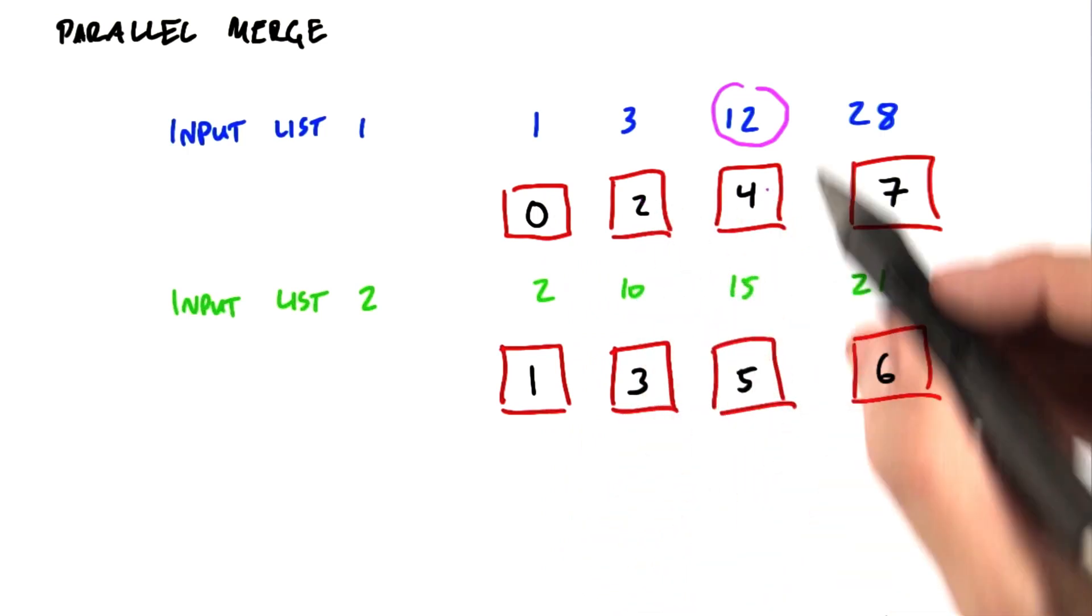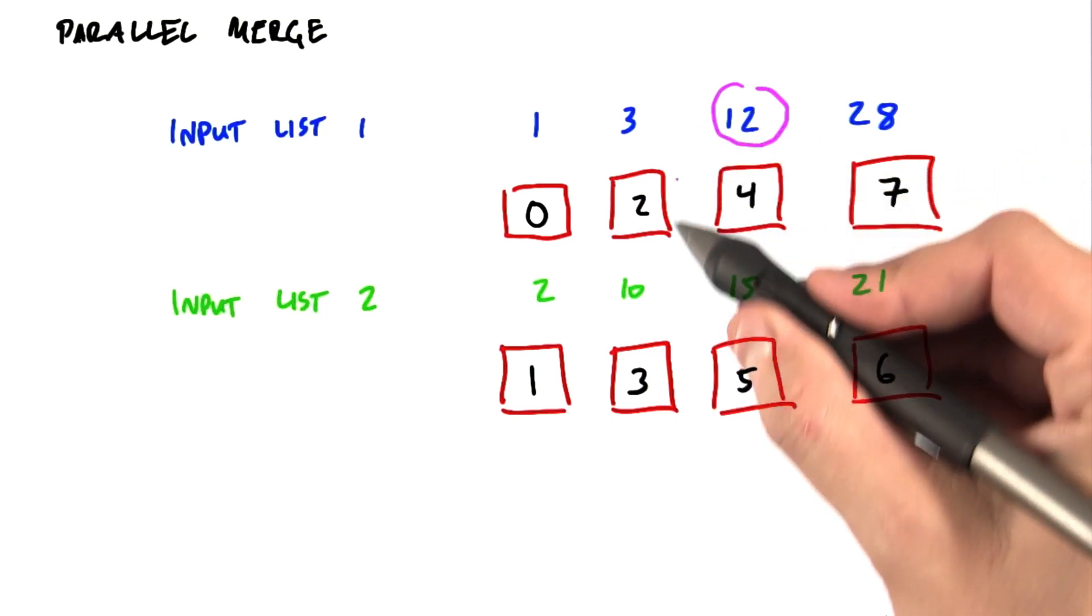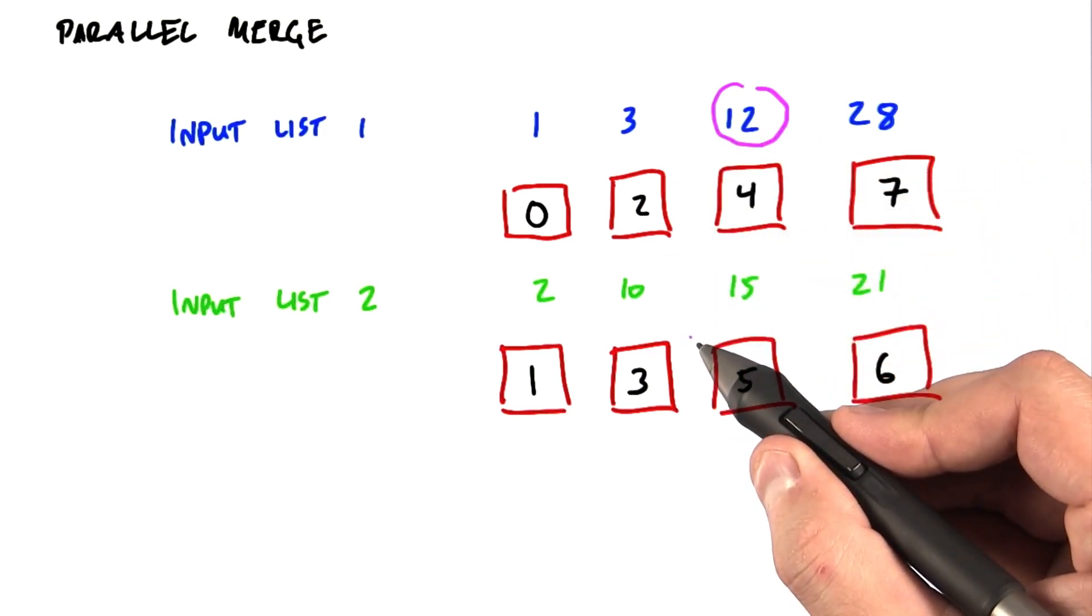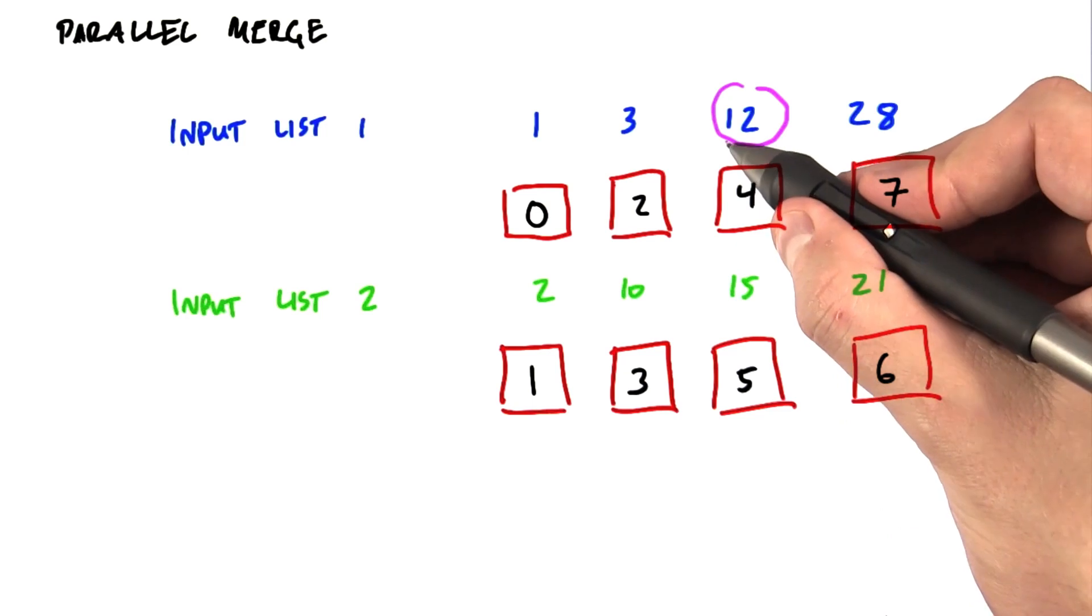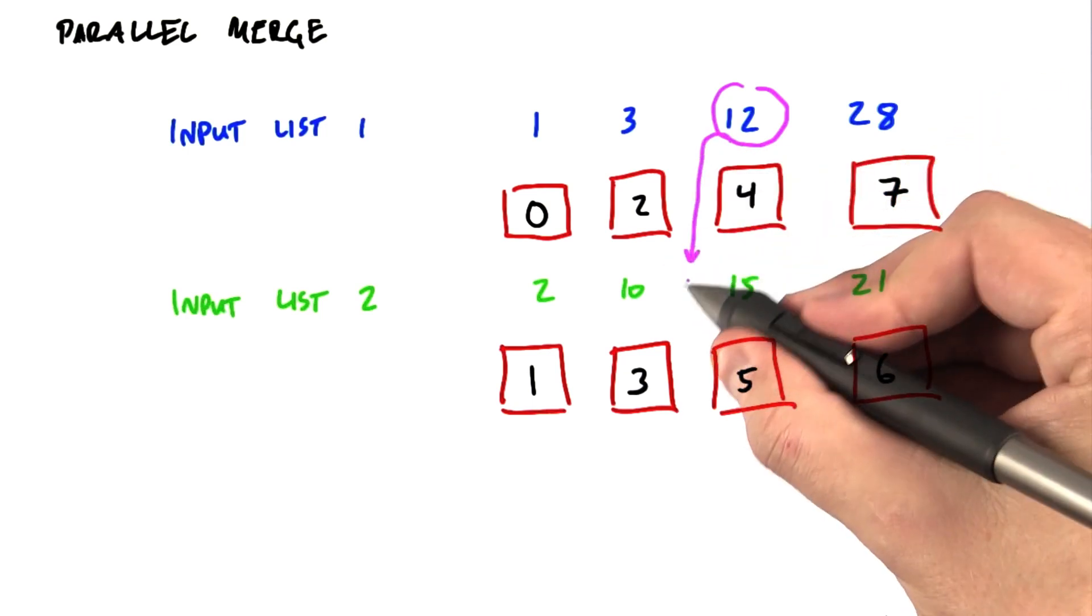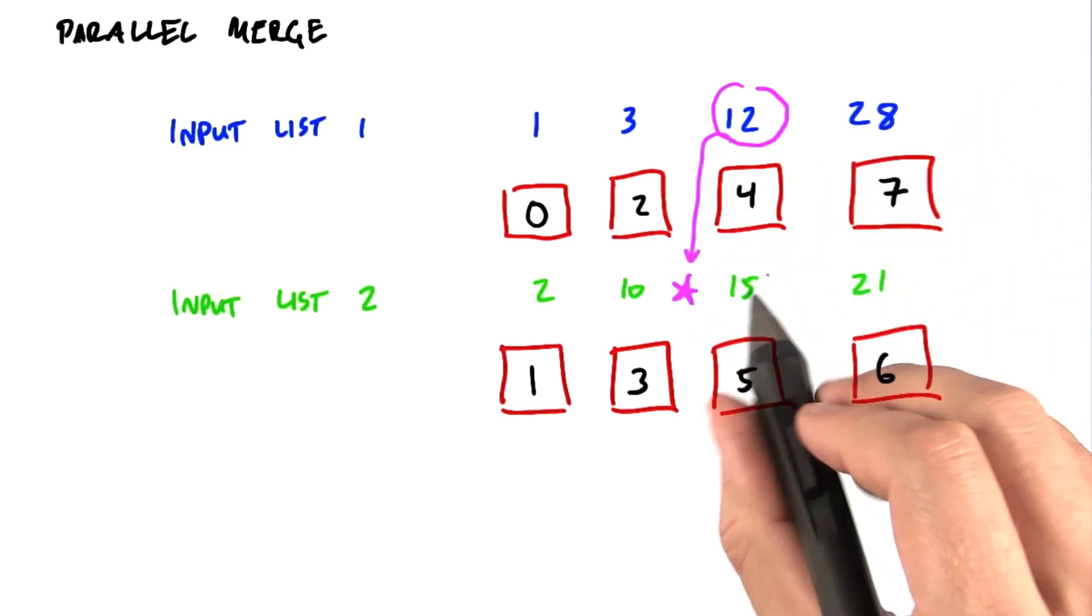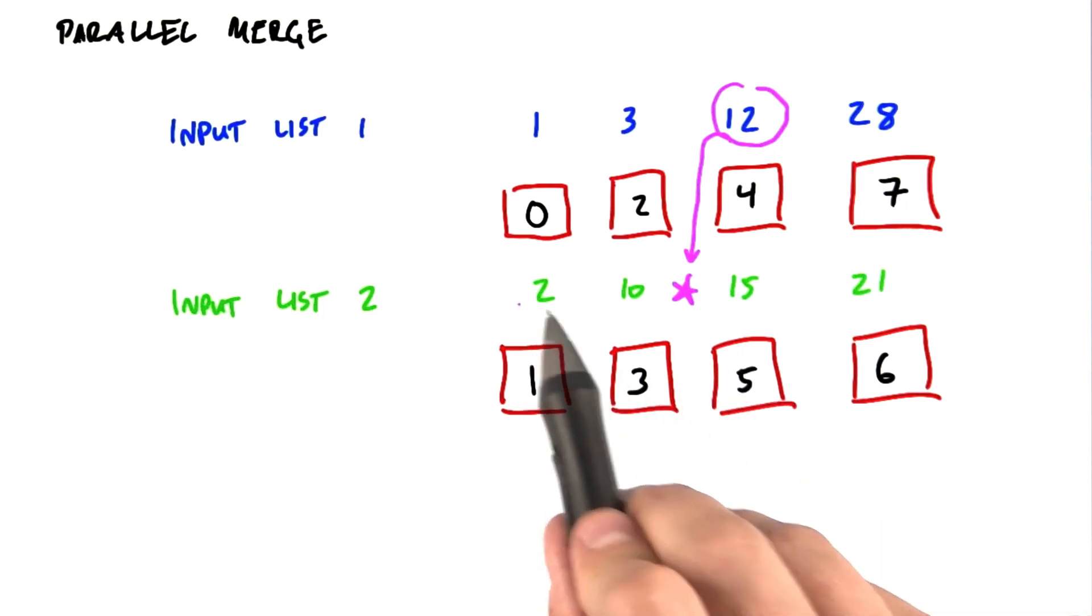Now, here's the cool part. This guy has to ask, where would I be in the other list? Well, if I look at this list, I would need to be right here. So if I was in that list, I would also be at position number 2 because there would be two elements in front of me.